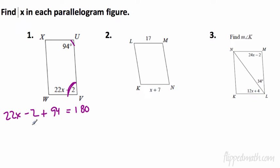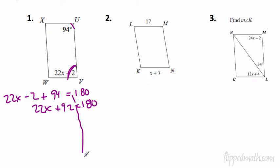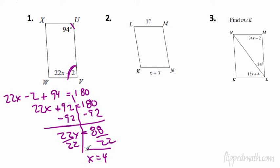22X minus 2 plus the other angle, 94. That should all equal 180. So now this is simple. We just have to do some algebra. 22X, we're going to combine like terms. Negative 2 plus 94 is a positive 92. So that should all equal 180. Subtract 92. We're so good at this now because we had flip mastery algebra. So 22X equals 88. We divide by 22 each side. 88 divided by 22, X equals 4. And they wanted us to solve for X. So guess what? We're all done with that one.